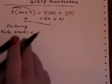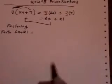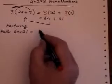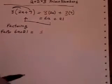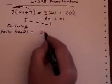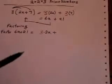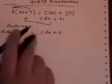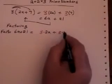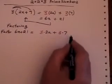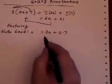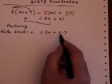My first step is I'm going to write 6a as 3 times 2a and 21 as 3 times 7. So I break it up into its prime factors.